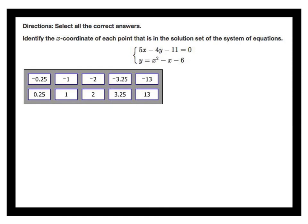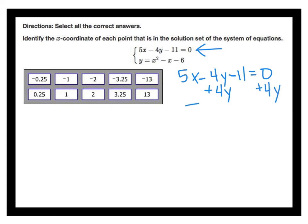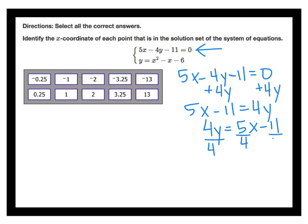Remember there is definitely more than one way to solve a system of equations. Since you have a graphing calculator, graphing is never a bad idea. You would need to take the first equation and solve it for y. I'm going to add 4y to each side, use the symmetric property to flip it, then divide by 4. That gives me y equals 5/4 x minus 11/4, which I can graph along with y equals x squared minus x minus 6 to see where they intersect.